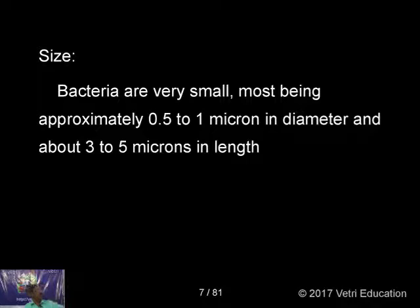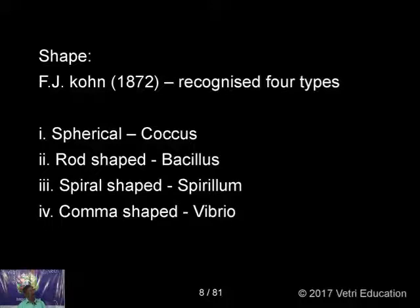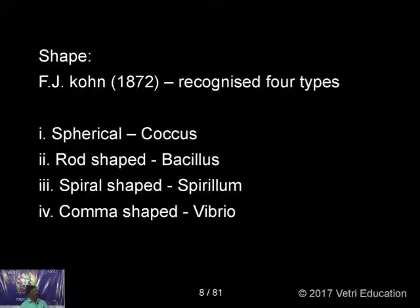Regarding size, bacteria are very small — ranging from 0.5 to 1 micron in diameter and about 3 to 5 microns in length. A micron is 1/1000 of a millimeter. Regarding shape, F.J. Cohn in 1872 recognized four types based on shape: spherical (coccus), rod-shaped (bacillus), spiral-shaped (spirillum), and comma-shaped (vibrio).